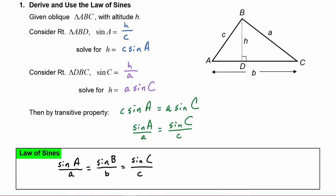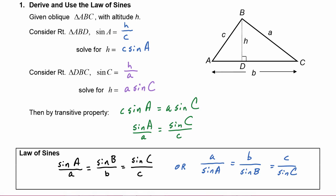Depending on whether we are solving for sides of the triangle, we may want to write the law of sines as a over sine A equals b over sine B equals c over sine C. The great thing about the law of sines is that it works in every kind of triangle — SOH CAH TOA only works in right triangles, but the law of sines works in every type of triangle.